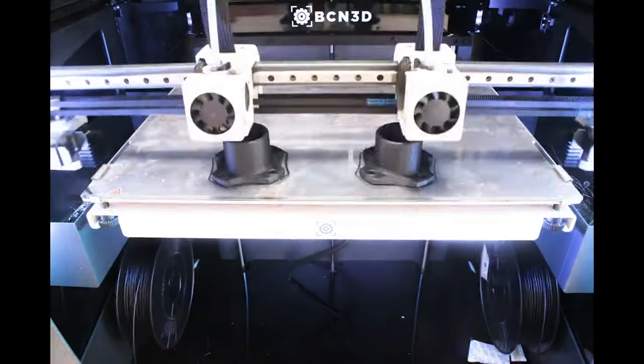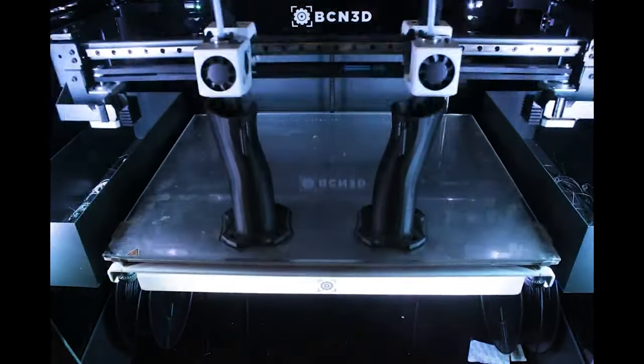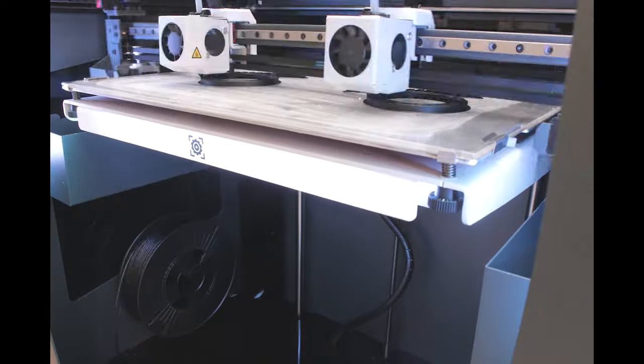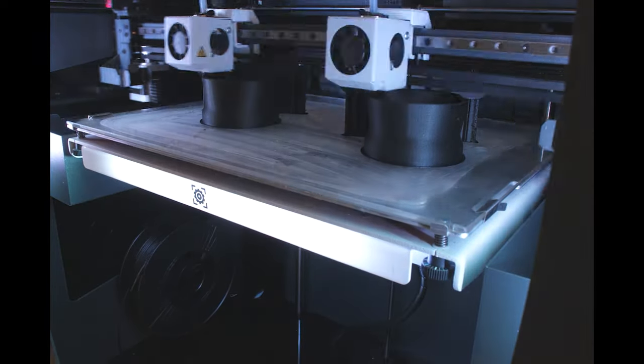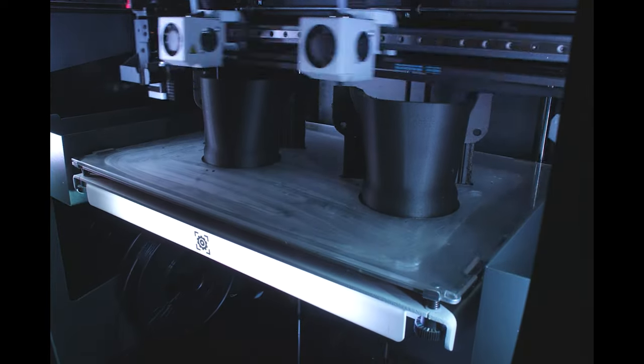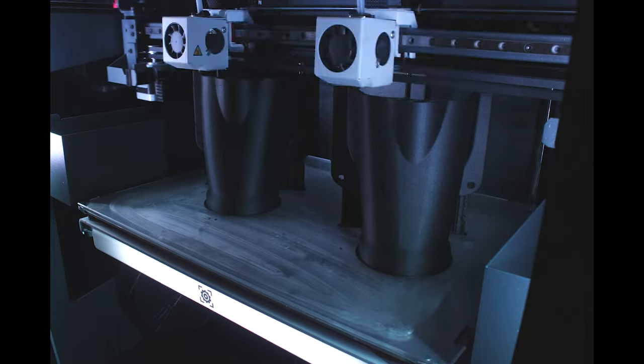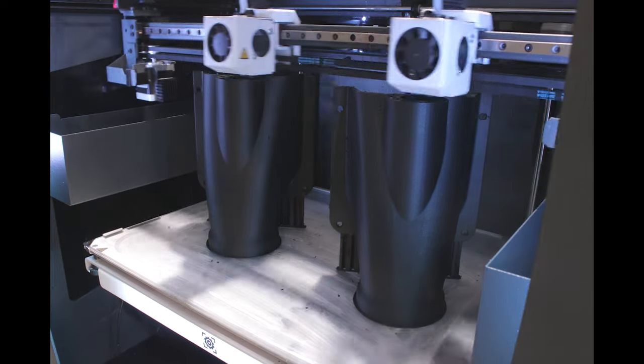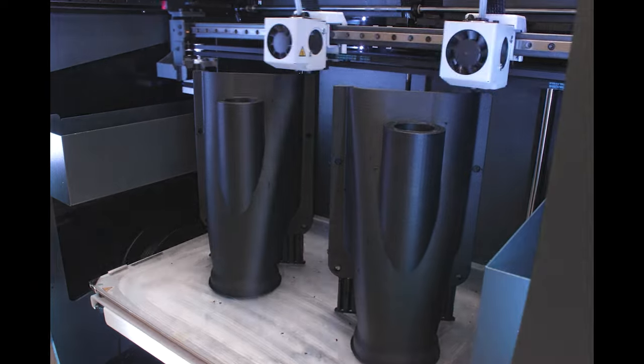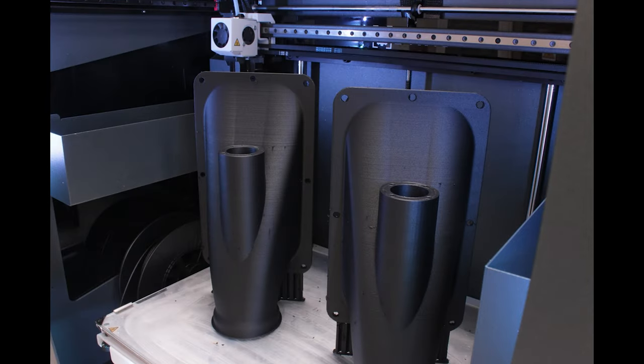Point number one, the build volume. Build volume refers to the maximum size of a model that a 3D printer can produce in a single print, a super important factor to consider if your company requires the printing of large parts. If the part you want doesn't fit, be aware you will need to print parts separately and assemble them in post-production.